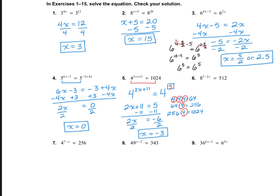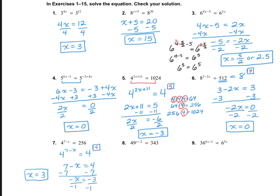Let's take a look at number 6. I want to find what power of 8 gives me 512. Using my calculator, 8 to the power of 3 gets me there. So 3 minus 2x equals 3. I'd like you to finish number 6 and also do number 7. For number 6, x equals 0, and for number 7, x equals 3. Please check your answers and see if you can find any mistakes.